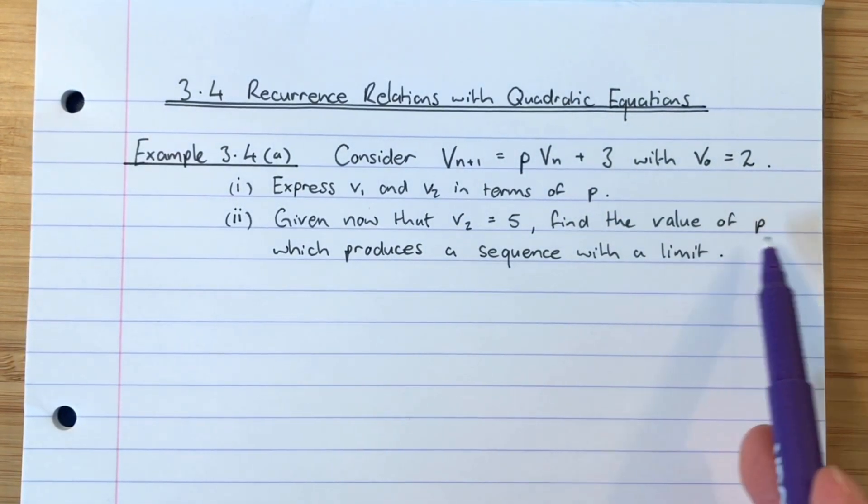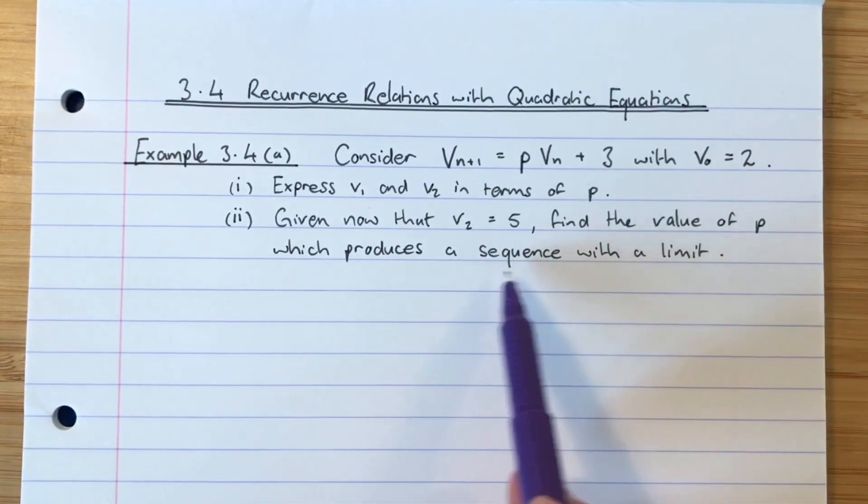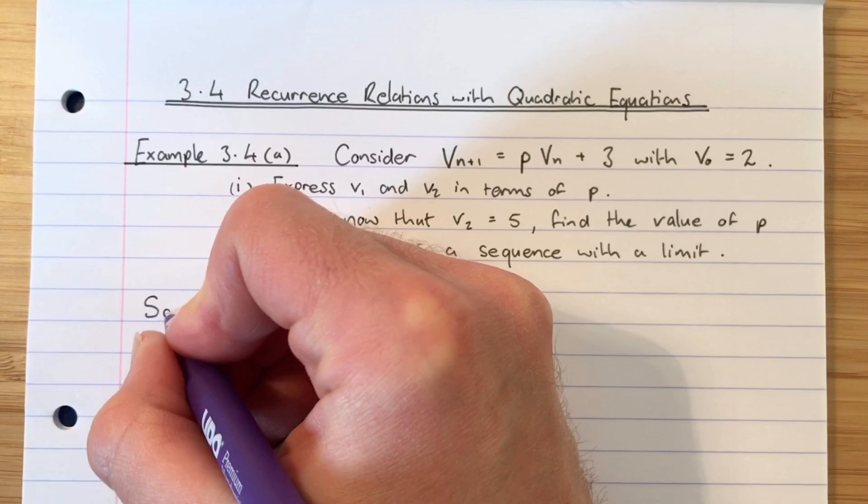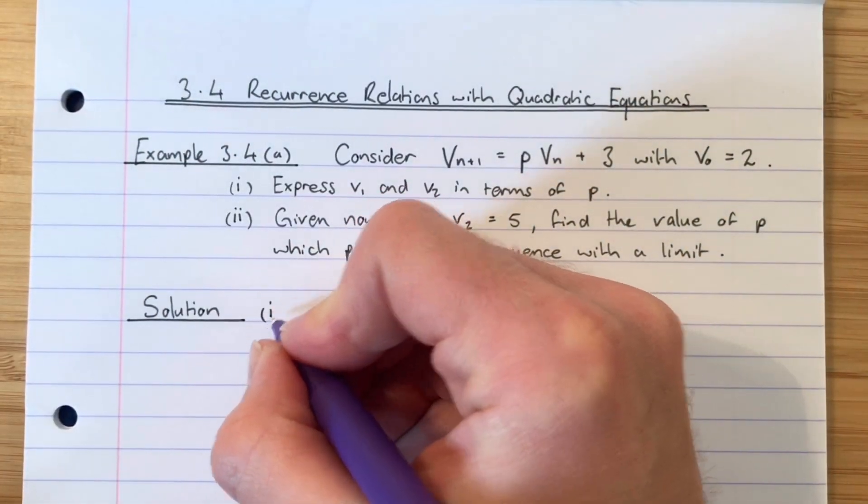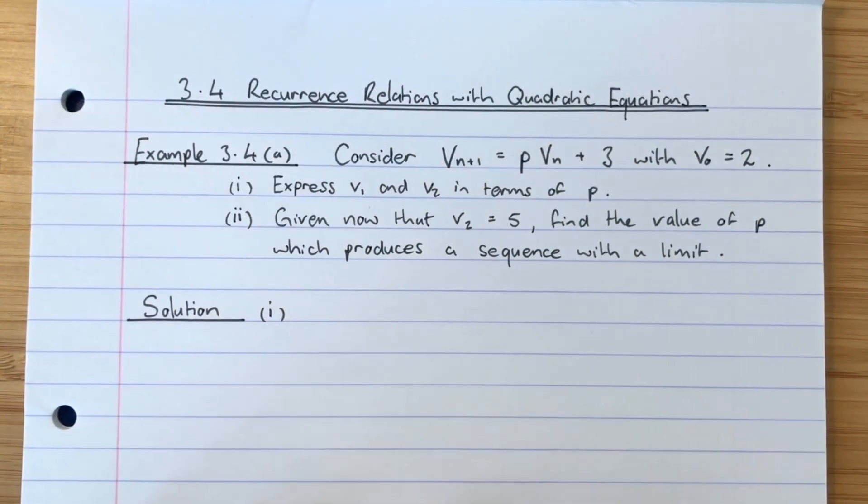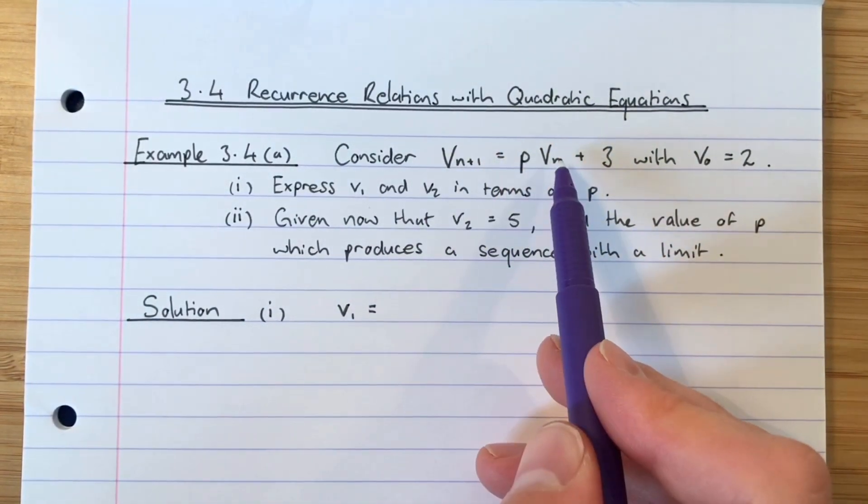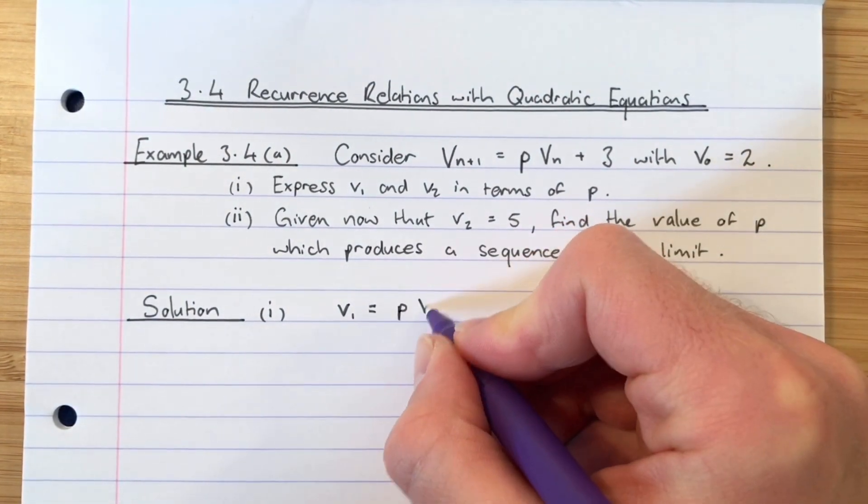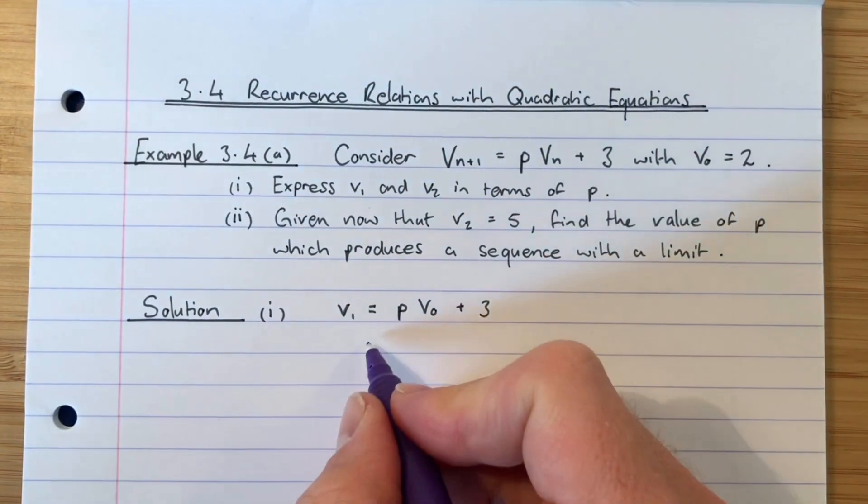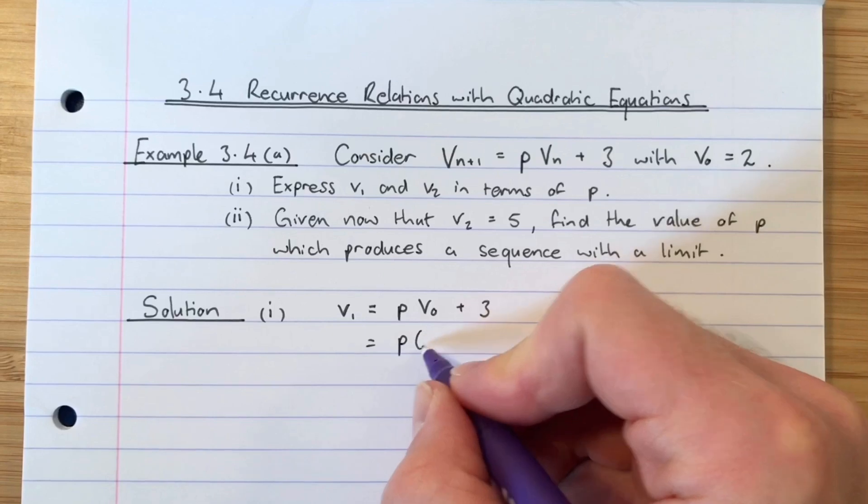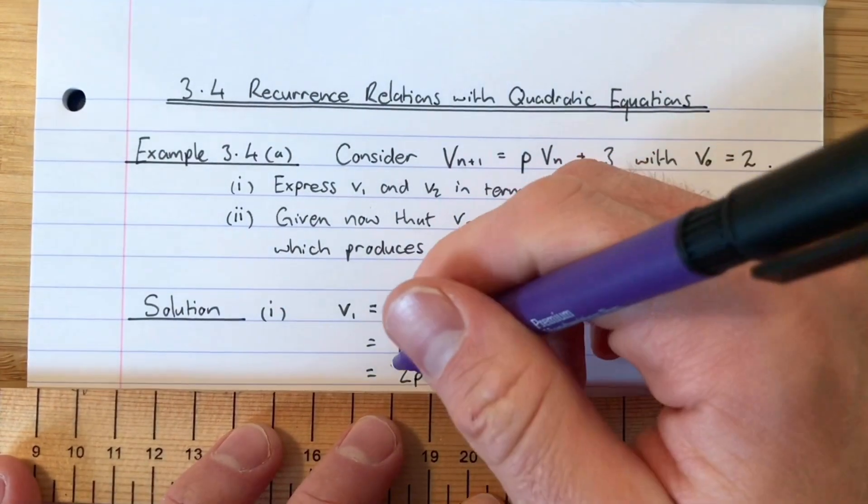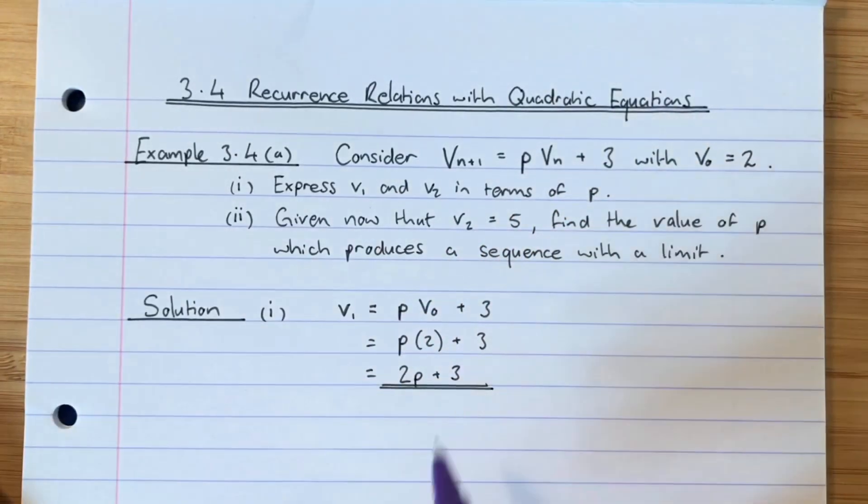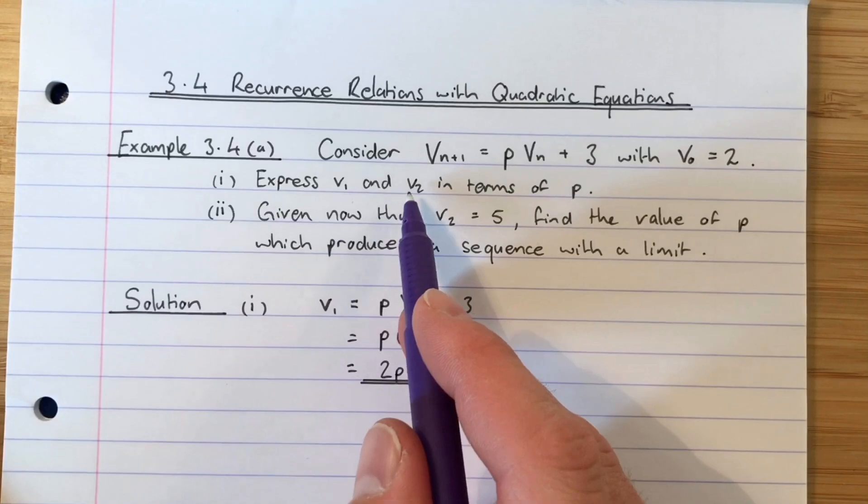I can read from that there's going to be two values of p, one of them will have a limit and we want the one that gives a limit. We'll cross that bridge when we come to it. So for part one it's express v_1 and v_2 in terms of p. So how do we find v_1? Well to find v_1 with a recurrence relation we simply sub in the previous term which is v_0. So it's going to be p times v_0 add three. Just to be absolutely clear we know what v_0 is, it's two, so it'll be p times two add three and that'll work out as two p plus three. So that is my expression for v_1.